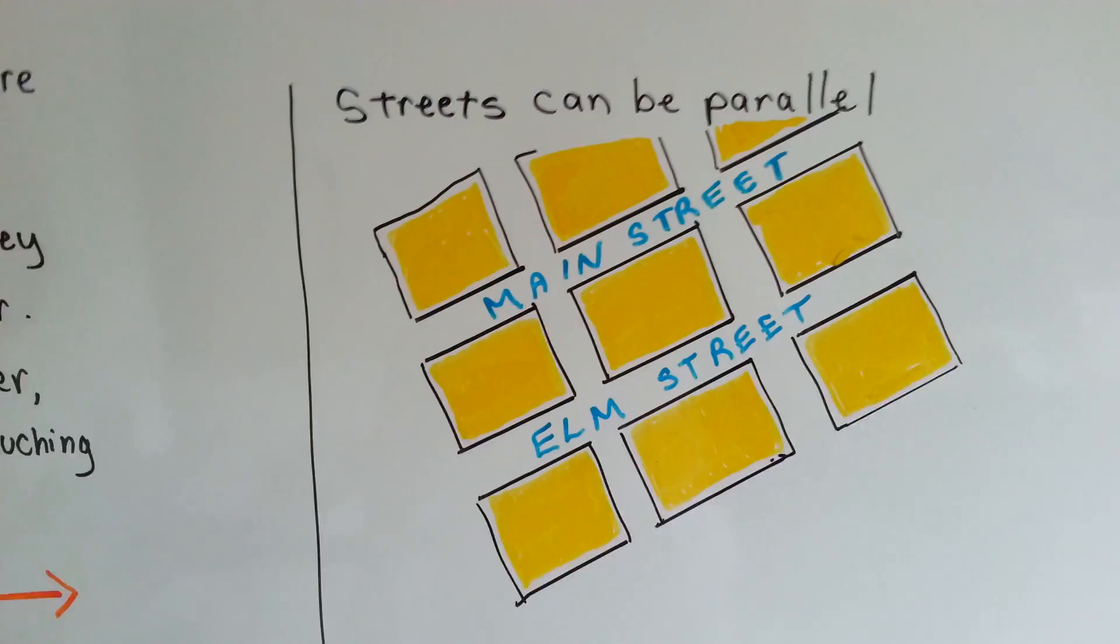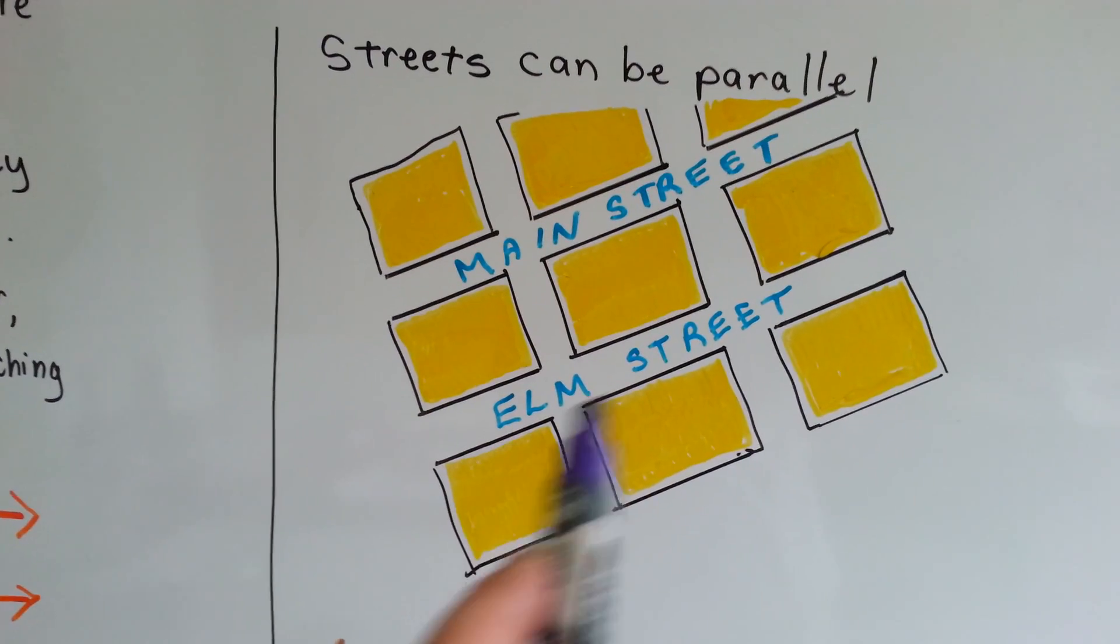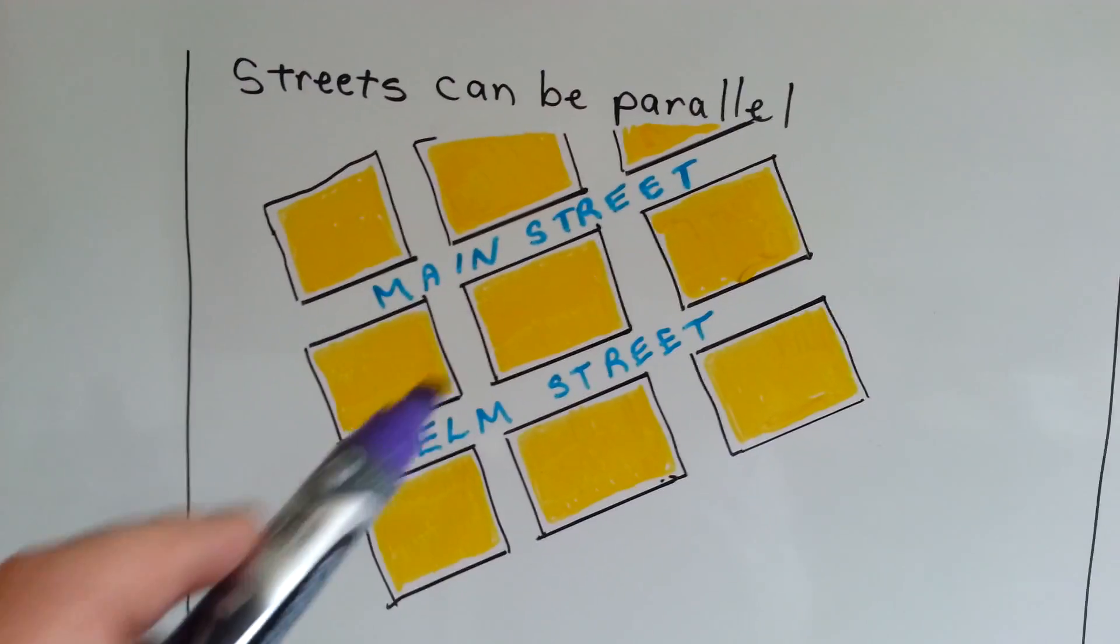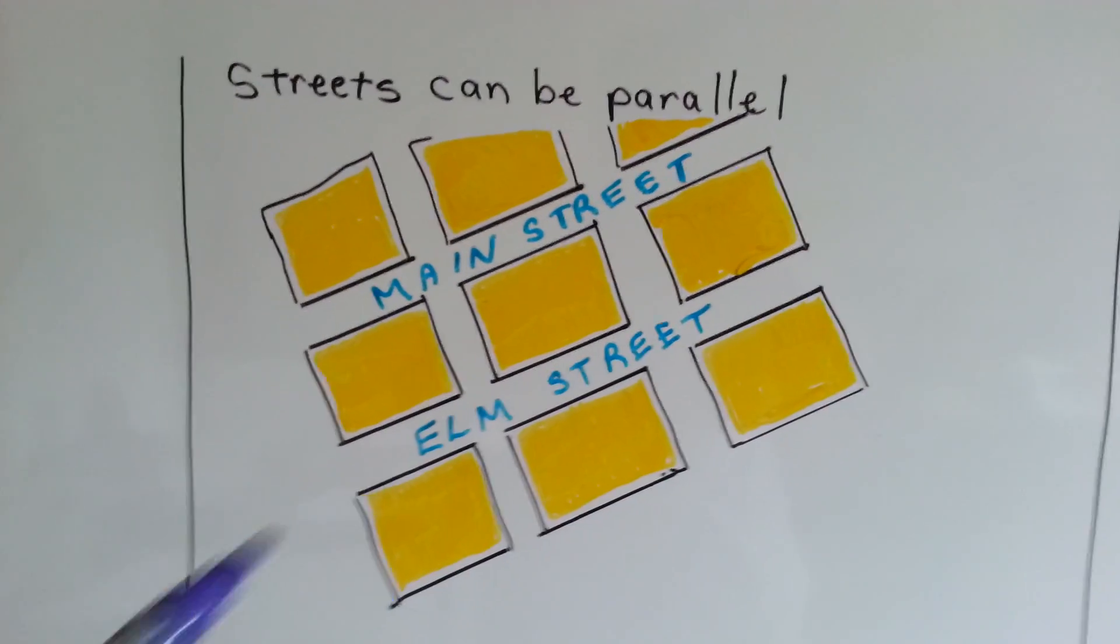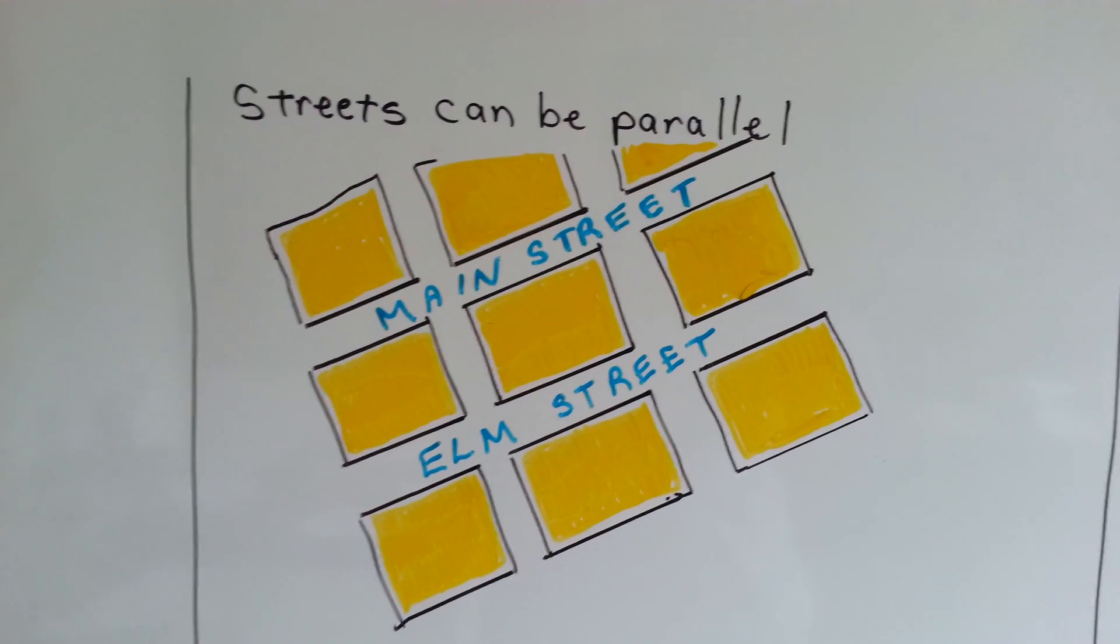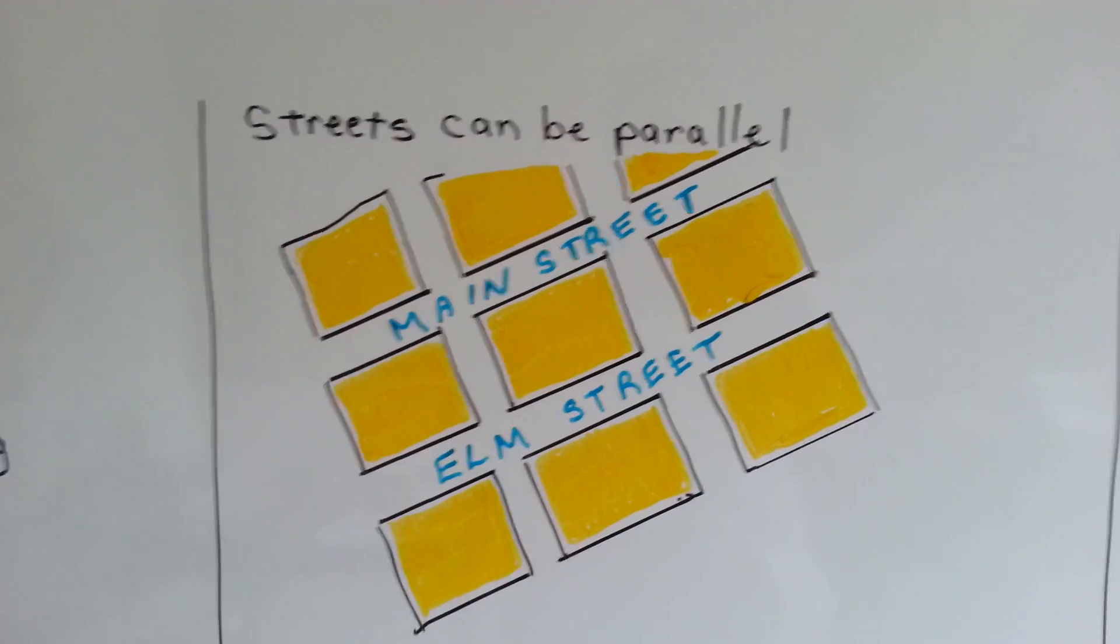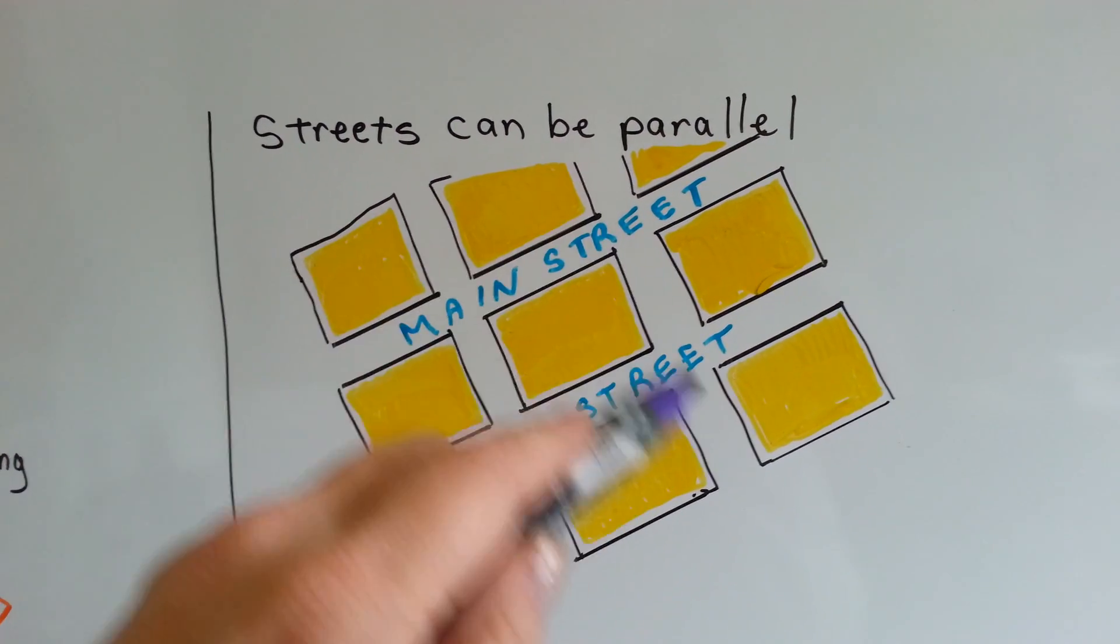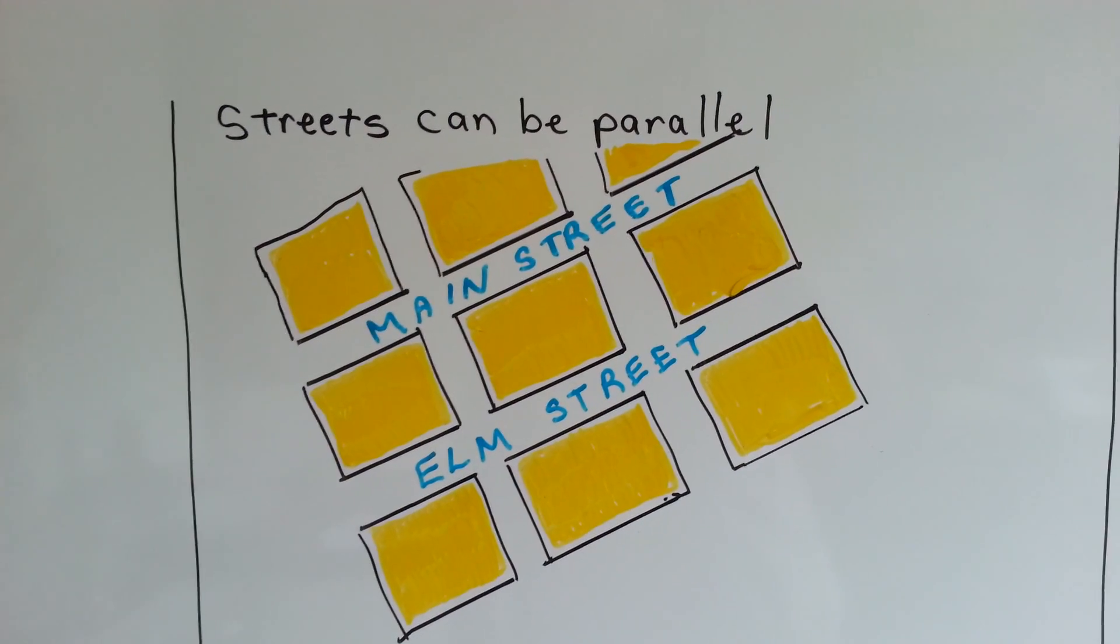Streets can be parallel. Main Street is parallel to Elm Street. See? If I turn it that way, see how? They're going side by side, and they're never going to cross each other. So on the map, they would just keep going, wouldn't they? Can you see that this street is parallel to this street? Even those are parallel to each other.